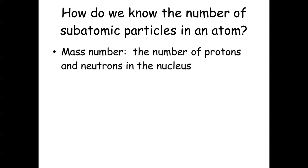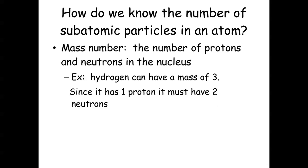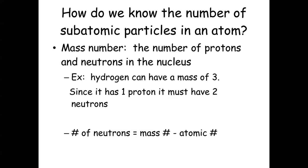The mass number is the number of protons and neutrons in the nucleus. So hydrogen can have a mass number of three — and we know hydrogen has one proton, so it must have two neutrons to get up to three. The number of neutrons is always equal to the mass number minus the atomic number.